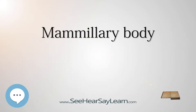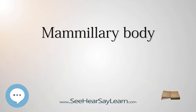The mammillary bodies are a pair of small round bodies, located on the undersurface of the brain that, as part of the diencephalon, form part of the limbic system. They are located at the ends of the anterior arches of the fornix. They consist of two groups of nuclei, the medial mammillary nuclei and the lateral mammillary nuclei.